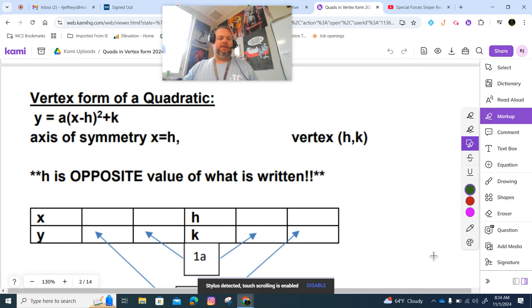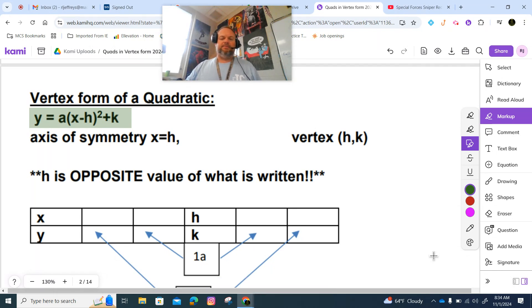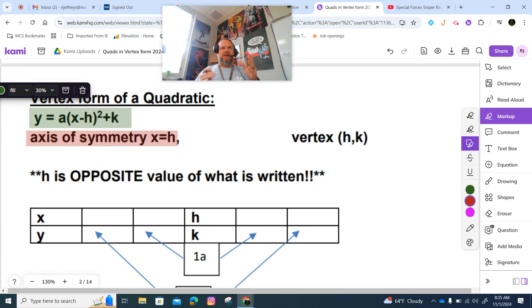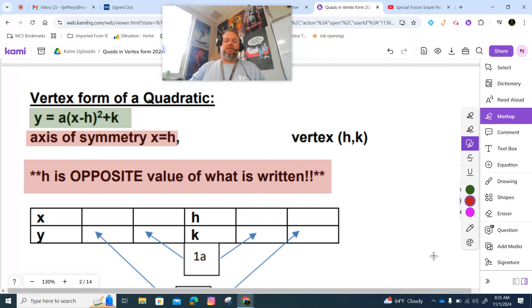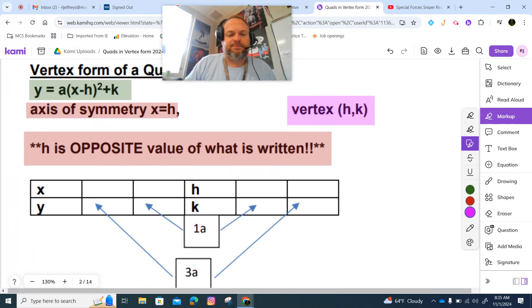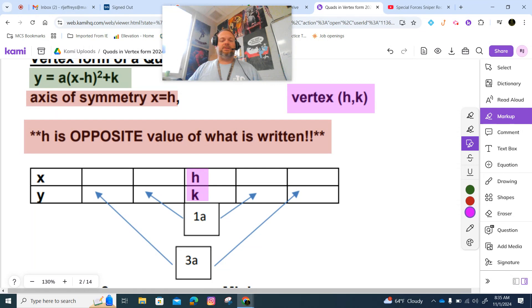Vertex form looks like this. Our axis of symmetry, our AOS, is x equals h. This is the easiest one - we don't have to do any type of calculations or counting. Remember, h is opposite value of what's written, and our vertex is h, k.